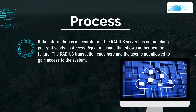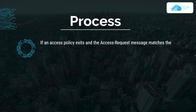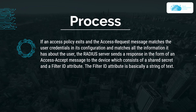If any of the information is inaccurate or the RADIUS server has no matching policy, it sends an access reject message indicating authentication failure, the RADIUS transaction ends, and the user is not allowed to gain access. However, if an access policy exists and the access request message matches the user credentials and all associated information, the RADIUS server sends an access accept message to the device.